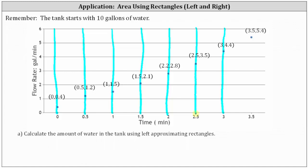Now that we have our subintervals, we will form rectangles where the height of each rectangle will be determined by the point on the left, because we're using left approximating rectangles. For the first subinterval, the height is going to be 0.4. This is the first left approximating rectangle. For the next subinterval, the point on the left determines the height of the rectangle, which is 1.2. For the next subinterval, the point on the left will give us the height, which is 1.5, and so on.